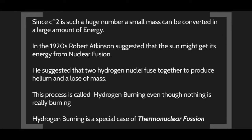In the 1920s Robert Atkinson suggested that the Sun gets its energy from nuclear fusion. Nuclear fusion is when you take two atomic nuclei and join them together into a larger nucleus. He suggested that hydrogen nuclei fuse together to produce helium. This process is called hydrogen burning, although nothing is truly burning — it is a nuclear reaction taking place.